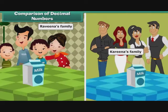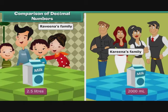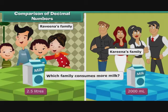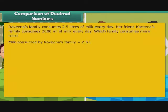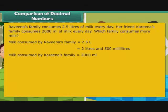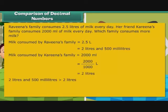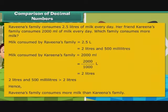Let us look at one more problem. Ravina's family consumes 2.5 litres of milk every day. Her friend Karan's family consumes 2000 ml of milk every day. Which family consumes more milk? Milk consumed by Ravina's family is equal to 2.5 litres, that is equal to 2 litres and 500 ml. Hence, Ravina's family consumes more milk than Karan's family.